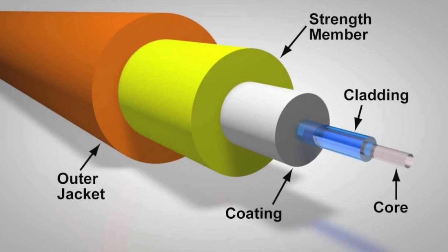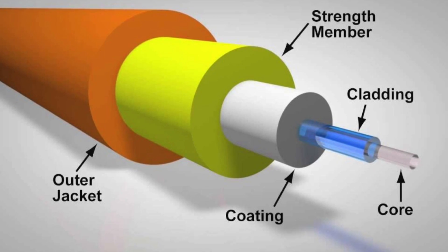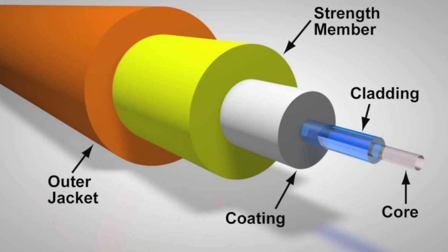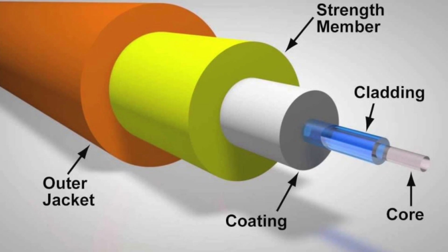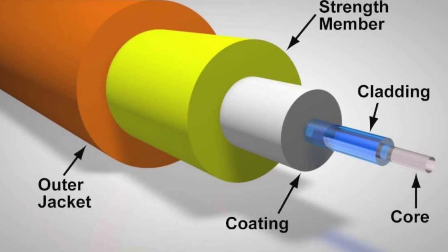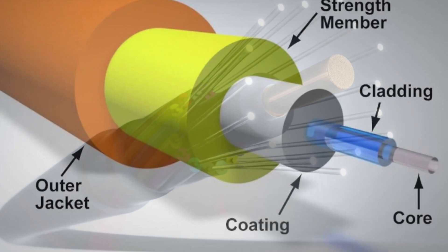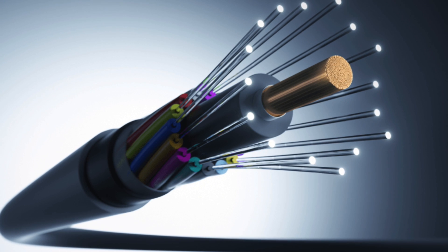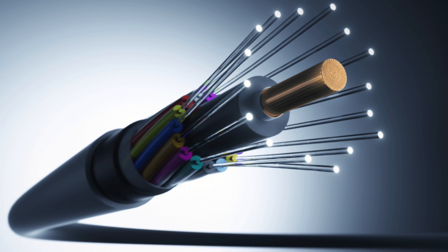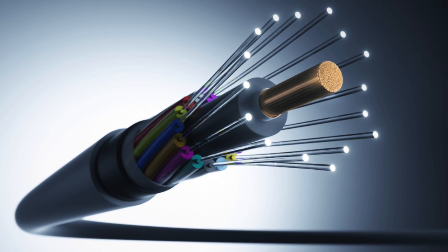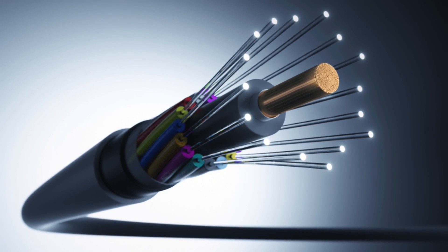These tubes are then surrounded by additional protective layers, including water-blocking materials, strength members made of materials like aramid yarn or steel, and an outer jacket made of durable plastic. Each layer is designed to protect the fibers from environmental hazards like moisture, physical stress, and temperature fluctuations.